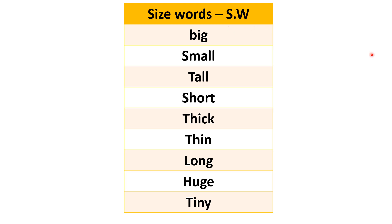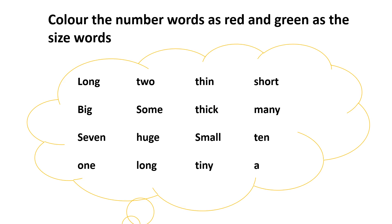Now let's do one activity. In this activity we have to color the number words as red and the size words as green. So the first word is 'long,' and we are going to color it green because it is a size word.